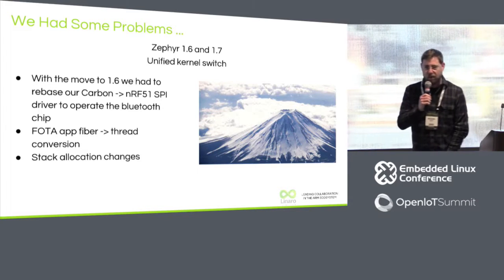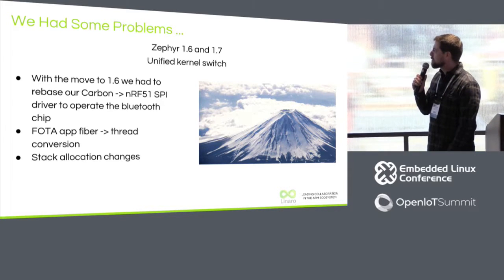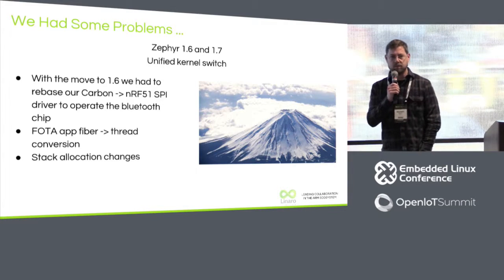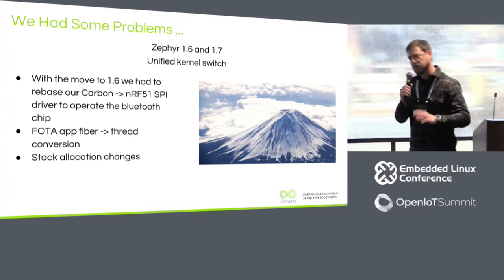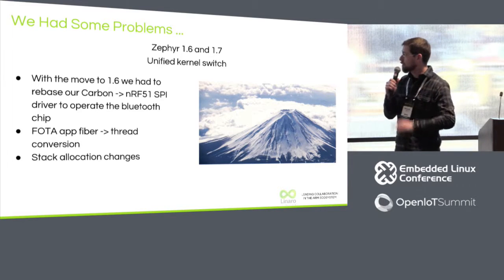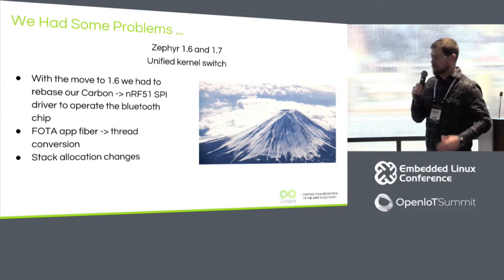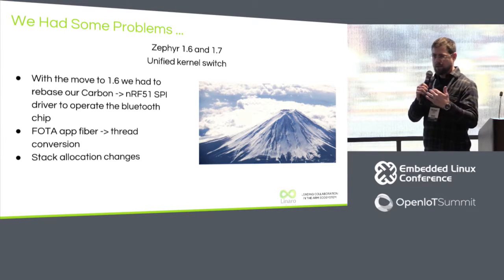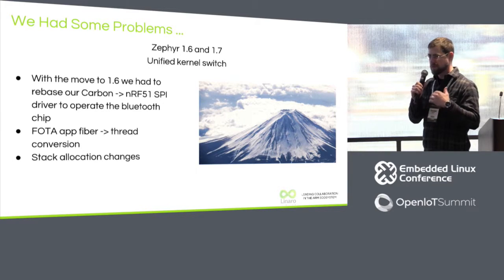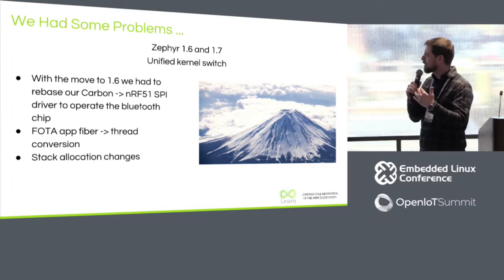The biggest change in Zephyr 1.6 was unifying the kernels. Prior to 1.6 we had the nano model and the micro kernel model. We had out-of-tree code using fibers and all the previous APIs. So immediately we had to start adjusting our code, which wasn't in the source trees — it took quite a while to bring that back up.